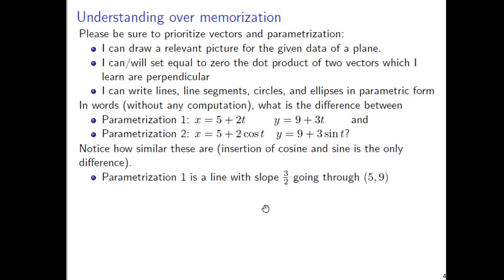And the first one is a line with slope 3 halves going through the point (5, 9). Now, how did I get the slope as 3 halves so quick? There's lots of ways to do it, and you can do a lot of work.